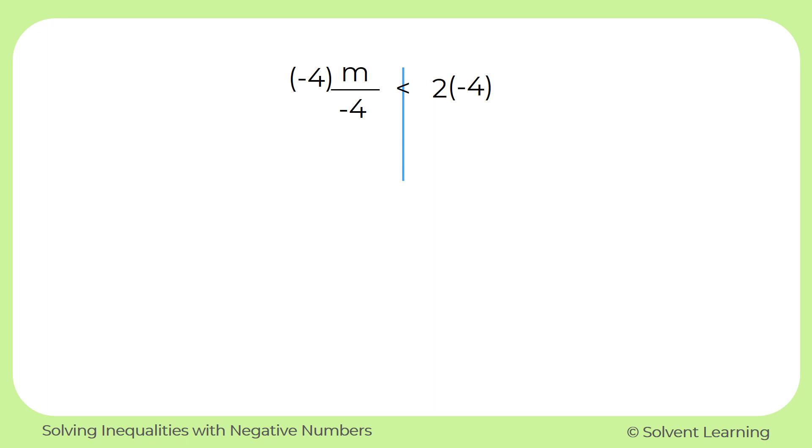On the left, negative 4 in the numerator cancels out the negative 4 in the denominator. So I have just m. And on the right side, 2 times negative 4 gives me negative 8. And once again, since we divided by a negative number, we'll have to flip our inequality sign. So the less than symbol flips around to become the greater than symbol.